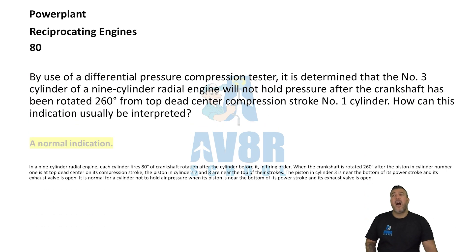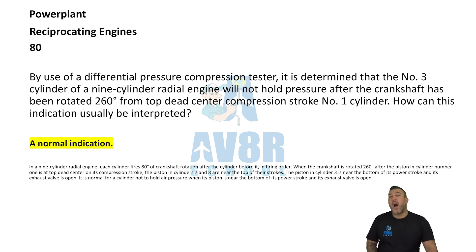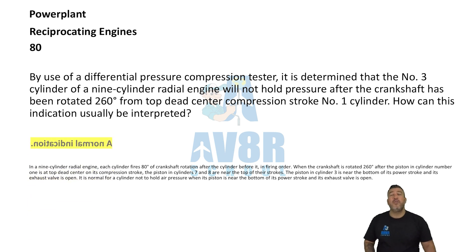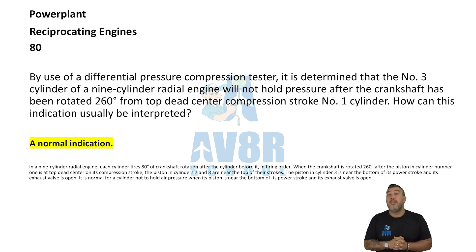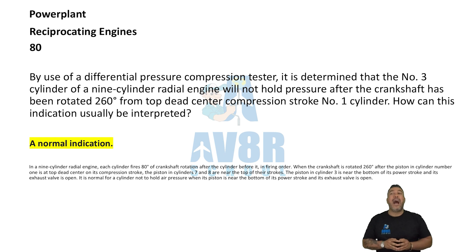Number 80: a normal indication. By use of a differential pressure compression tester, it is determined that the number three cylinder of a nine-cylinder radial engine will not hold pressure after the crankshaft has been rotated 260 degrees from top dead center on the compression stroke of number one cylinder. How can this indication be interpreted? It is a normal indication.